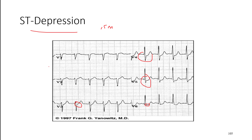Contiguous leads are those buddy leads — two or more leads looking at the same region of the heart: anterior leads, lateral leads. In this example, we're seeing ST depression in V5 and V6 (both lateral leads), and V3 and V4 (both anterior leads). Even though V4 and V5 look at slightly different areas, they're right next to each other, so that would technically be contiguous as well. The classification is greater than or equal to 0.5 millimeter depression at the J-point.